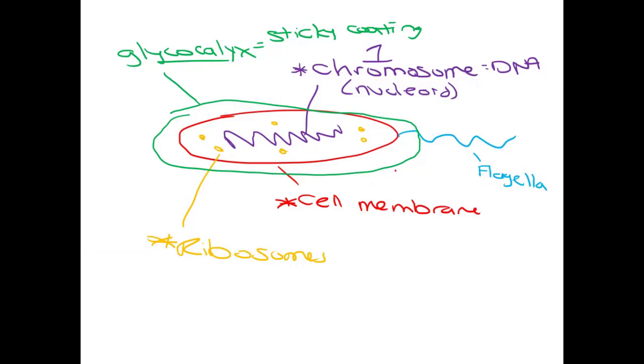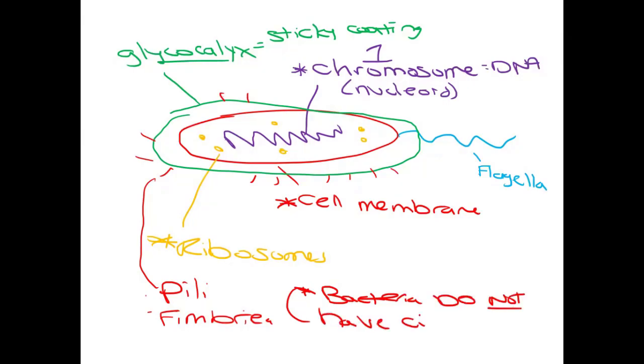Some bacteria have these little hair-like things all around them. These could either be pili or they could be fimbriae. Some bacteria have both, some have one or the other. Write this down because everybody gets this confused: bacteria do not have cilia. Cilia is that stuff you have in your throat lining your respiratory tract. Bacteria have pili or fimbriae, they do not have cilia.